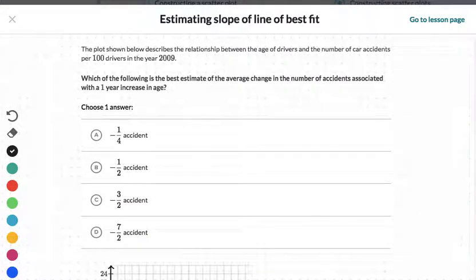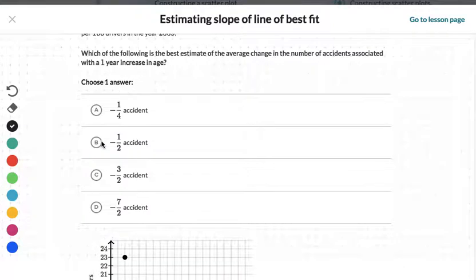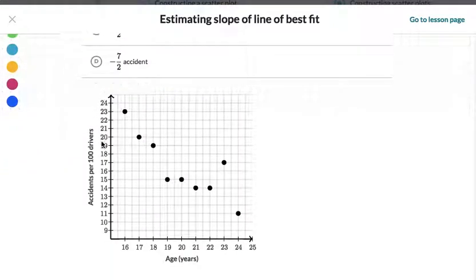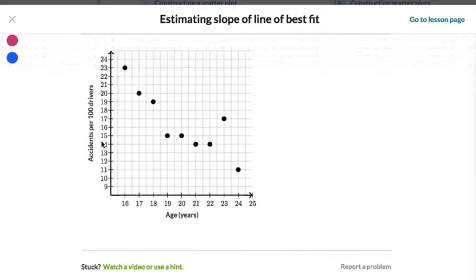Okay, let's take a look at a couple more. The plot below shows the relationship between the age of drivers and the number of car accidents per 100 drivers in the year 2009. Which of the following is the best estimate of the average change in the number of accidents associated with a one year increase in age? What happens as you get older? Does your rate of accidents get smaller? And yes it does.